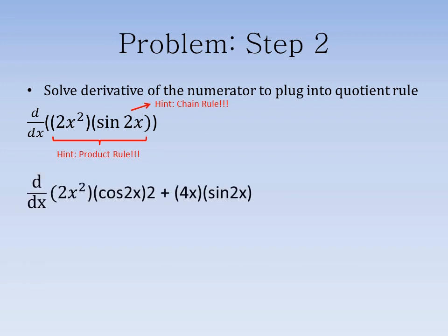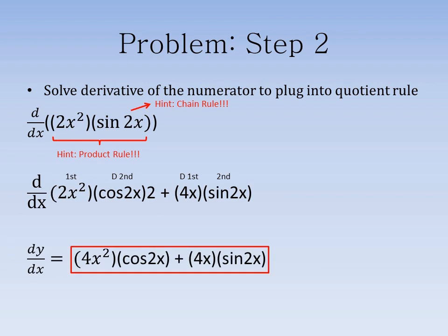The derivative is created by multiplying the first term, 2x squared, by the derivative of the second term, cosine 2x times 2. Added to this is the derivative of the first term, 4x, times the second term, sine 2x. Finally, we will combine like terms to get the final answer for the numerator.